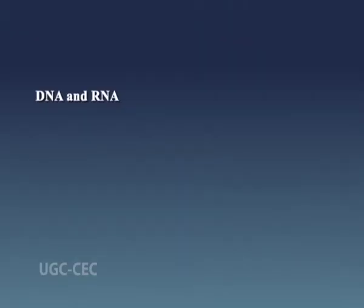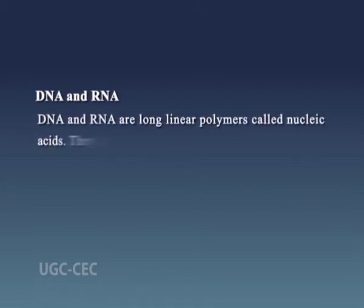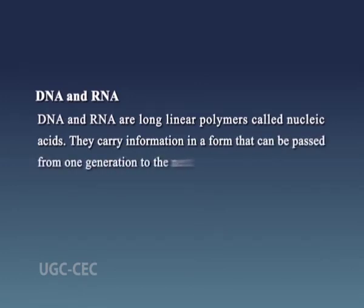Next are DNA and RNA. DNA and RNA are long linear polymers called nucleic acids. They carry information in a form that can be passed from one generation to the next. These macromolecules consist of a large number of linked nucleotides, each composed of a sugar, a phosphate, and a base. The stable form of DNA is a double helical structure, which is stabilized by different types of interactions among the constituent subunits.